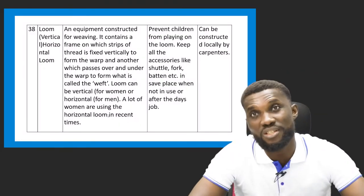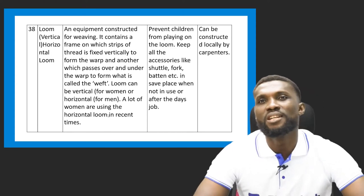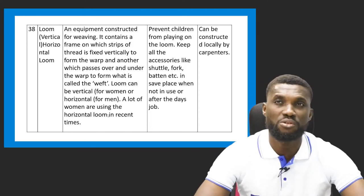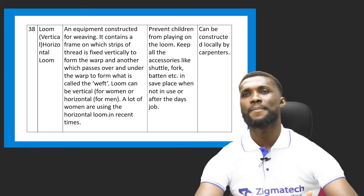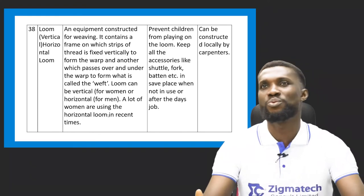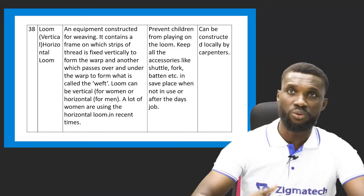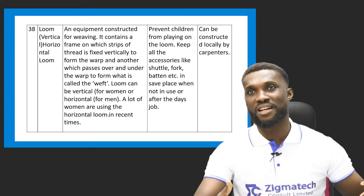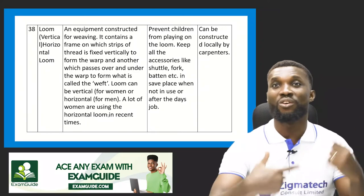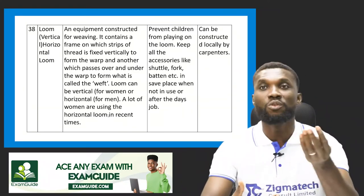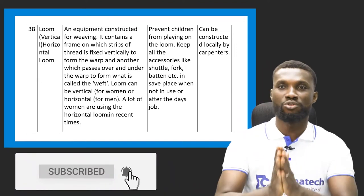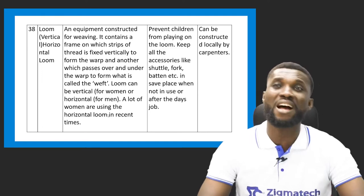The next art material we'll discuss is the loom. The loom most times comes in vertical or horizontal form and has different shapes and sizes. A loom is an equipment constructed for weaving. It contains a frame in which strips of thread are fixed vertically to form the warp. It has a space where a shuttle passes through — on that shuttle you have what we call the weft, which passes vertically through the horizontal warp to form your material.